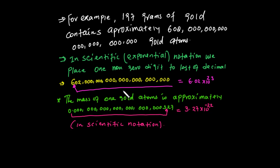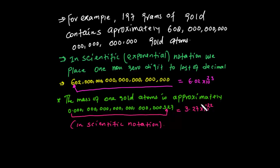We can also express very large numbers and very small numbers using scientific notation. For example, the mass of one gold atom is approximately 0.000000000000000000000000327 grams — that is a very small number. In scientific notation, this is written as 3.27 times 10 to the power of minus 22 meters. That is what we call scientific notation.